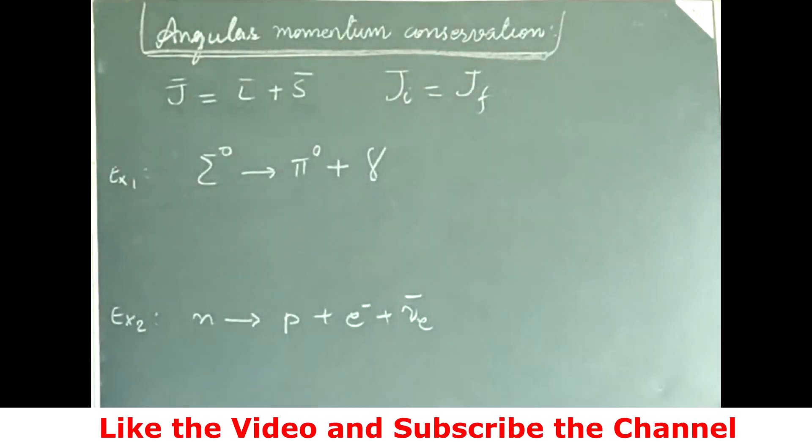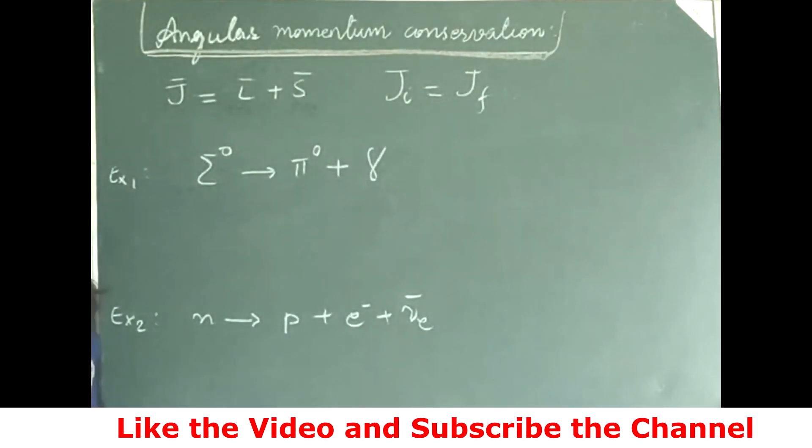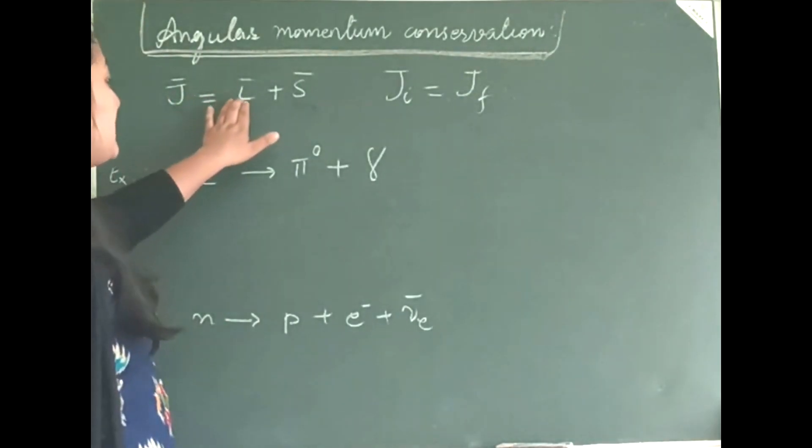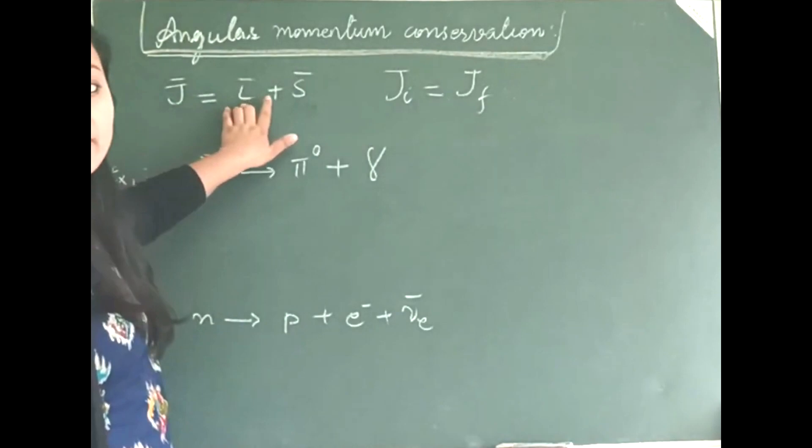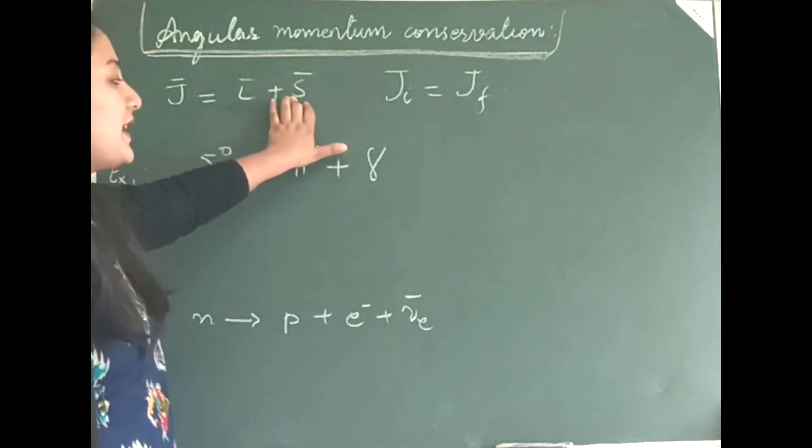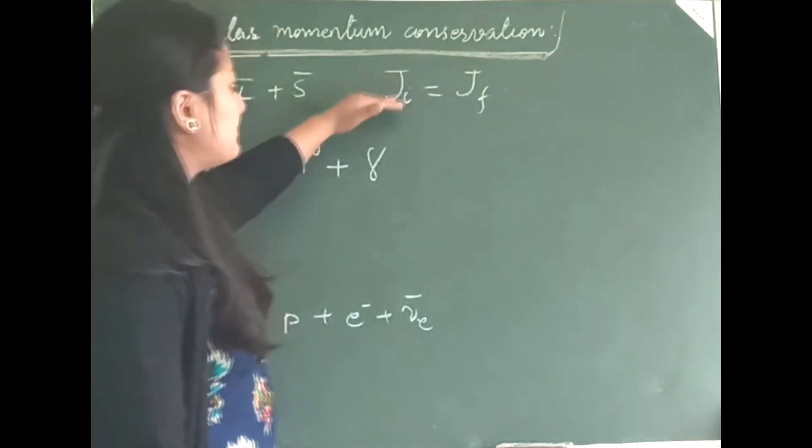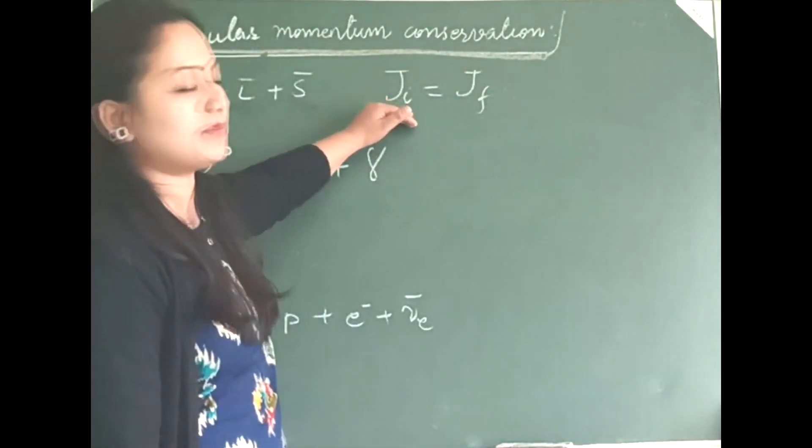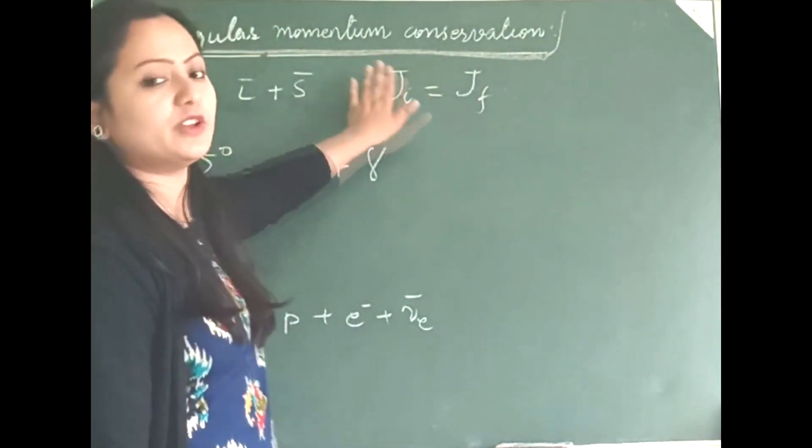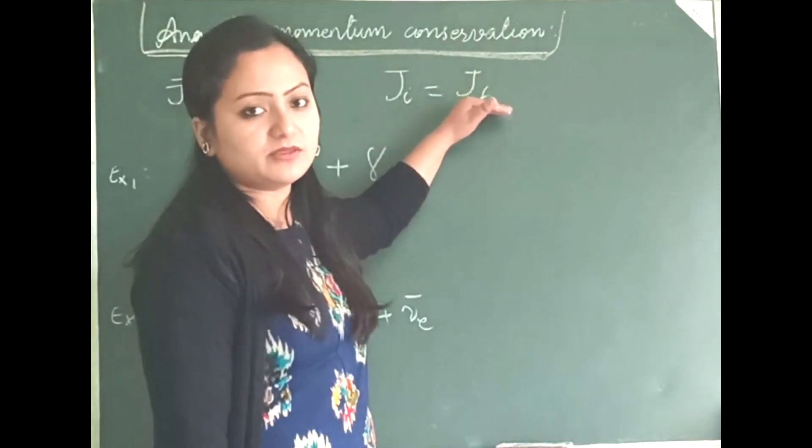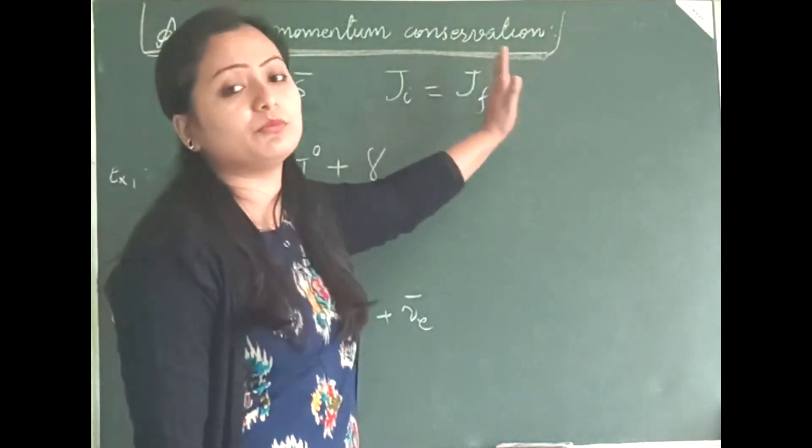In this video, we will be talking about angular momentum conservation. The total angular momentum J is given by the sum of orbital angular momentum L and the spin angular momentum S. Angular momentum conservation demands that my initial angular momentum, that means the angular momentum on the reactant side, should be equal to the final angular momentum, that is angular momentum on the product side.